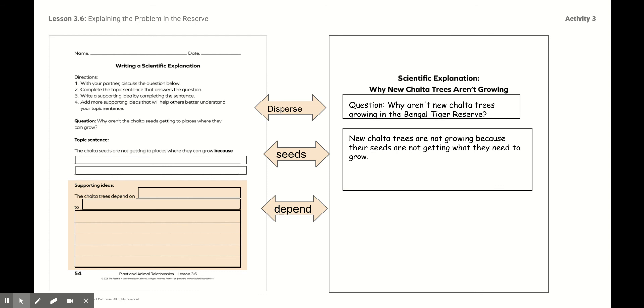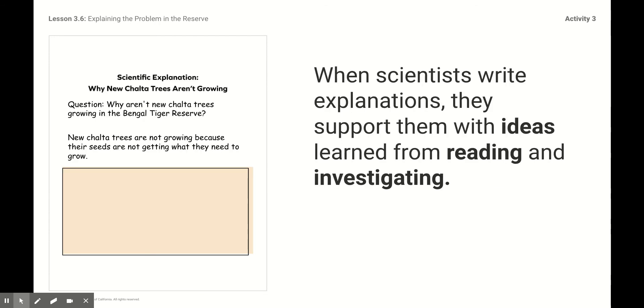And then support that with some ideas that you have seen throughout this lesson. The second part of your assignment is to explain why aren't new chalta trees growing in the Bengal Tiger Reserve. The new chalta trees are not growing because their seeds are not getting what they need to grow. And explain why. So you can do that here. This is your final worksheet. And make it great. Use as much scientific evidence as you can. Use the words that we've shown you within this lesson. And I hope it's a great one. And I can't wait to read what you are writing.